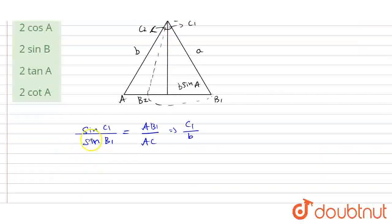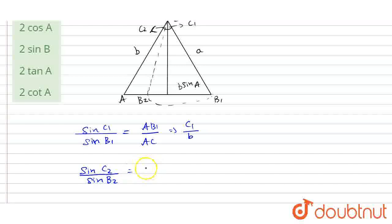Now I am going to find the next term: sinC2 divided by sinB2, which is equal to C2 divided by B.